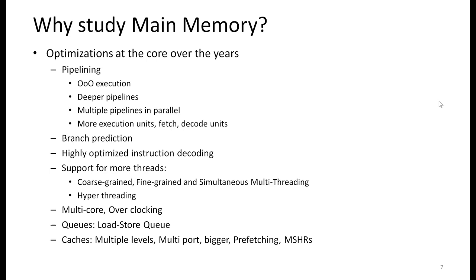So the entire core and cache on the chip have improved over time. If that is the case, why would we still need to look at the main memory?